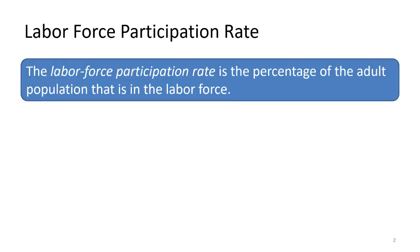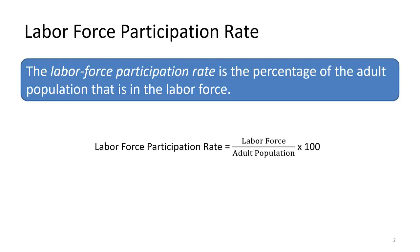Labor force participation rate is measured as the percentage of the adult population that is in the labor force. It's the share of the total adult population — and by definition, adult population is anybody who is 16 or over in the United States. In a healthy economy, a substantial number of the adult population should be in the labor force. The formula is: labor force divided by adult population, multiplied by 100.